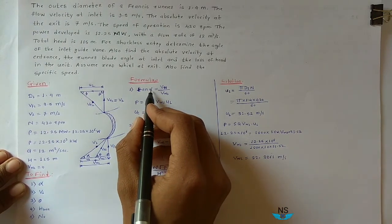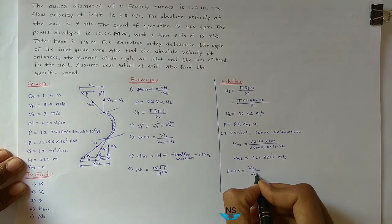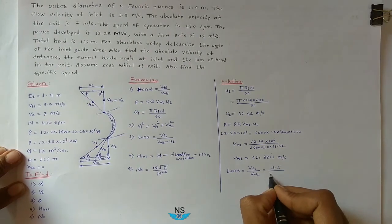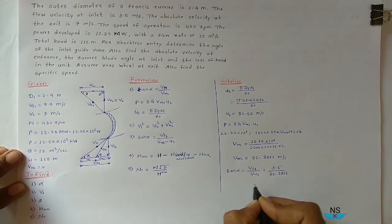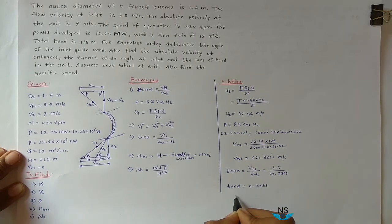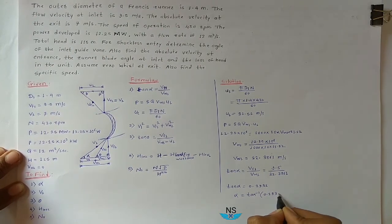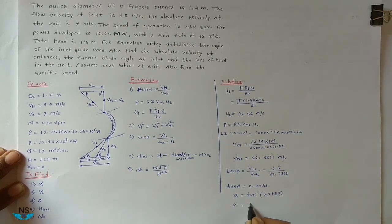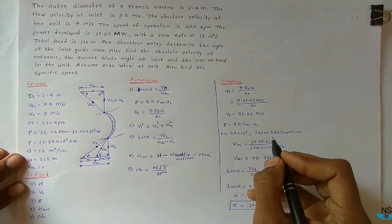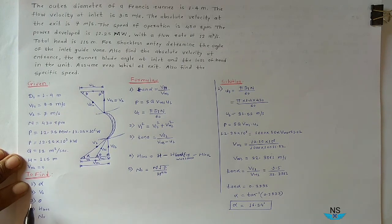Now we can find Alpha. tan(Alpha) = Vf1 / Vw1 = 9.5 / 32.3861 = 0.2933. Therefore Alpha = tan⁻¹(0.2933) = 16.34 degrees. This is the answer to the first question — the Guide Vane Angle at Inlet.